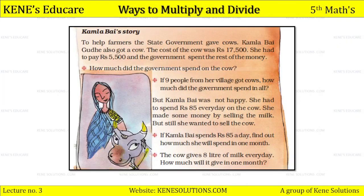Next is Kamla Bai's story. To help farmers, the state government gave cows. Kamla Bai Gunde also got a cow. The cost of the cow was 17,500 rupees. She had to pay 5,500 and the government paid the rest. How much did the government spend on one cow? We calculate 17,500 minus 5,500.